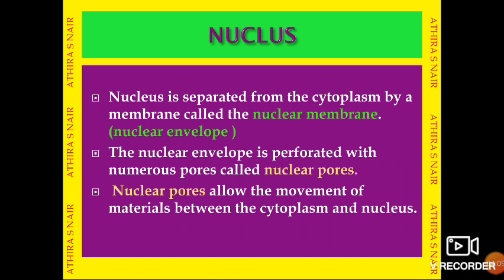The nucleus is separated from the cytoplasm by a membrane called the nuclear membrane or nuclear envelope — that is the outer boundary of the nucleus. The nuclear envelope is perforated with numerous pores called nuclear pores. Nuclear pores allow the movement of materials between the cytoplasm and the nucleus.